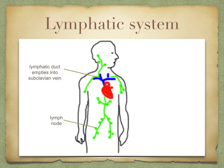The lymphatic system does not have a pump, so the flow of lymph is slow. The contraction of surrounding muscles helps to make it flow. Lymph flows from the tissues to the heart, and the smaller lymph vessels join up to form large lymph vessels, which empty into the subclavian veins by your collarbones. Here, the lymph mixes with the blood before joining the vena cava, just before it enters the heart.